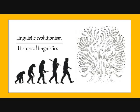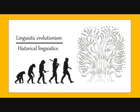Linguistic evolutionism advocates the principle of continuity, which states that as language is a very complex process, it must have evolved little by little from the earliest relatives of humans — the primates. That's why it's called continuity: it was a continuous and long process.